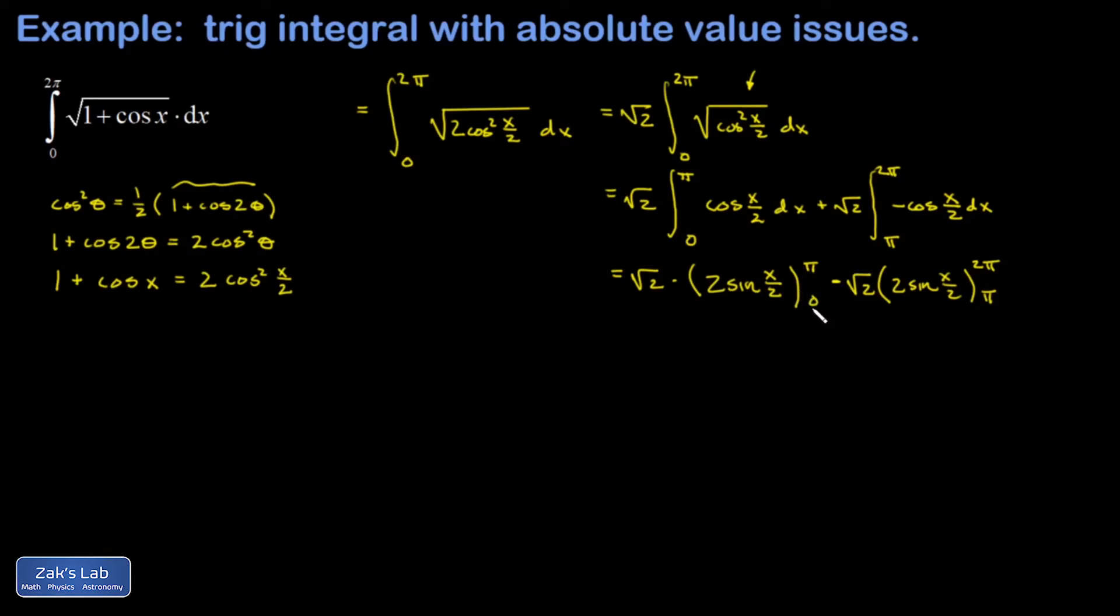I notice in the first one when I plug in the lower limit that gives me the sine of 0 which is 0. So no need to write that down separately. In the second term when I plug in the upper limit I get the sine of pi which is 0. And what we're left with for the first one is a 2 root 2 sine of pi over 2. But the sine of pi over 2 is 1.